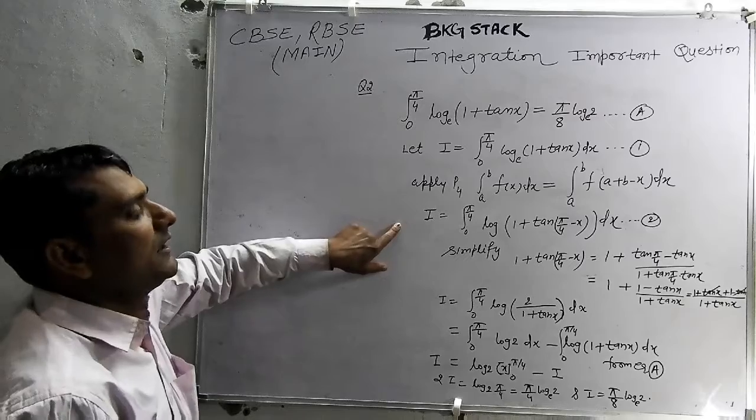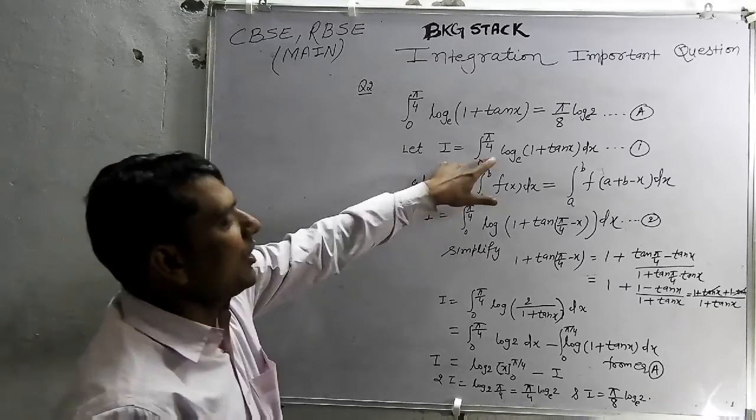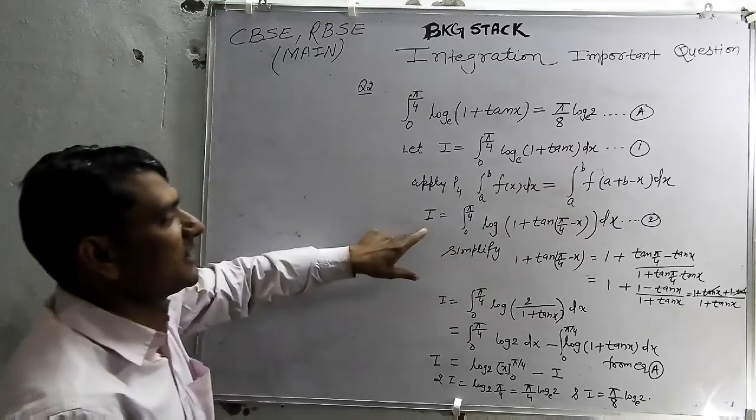Now, this is applied in equation 1. Log 1 plus 10 pi by 4 minus x into dx. This is equation 2.